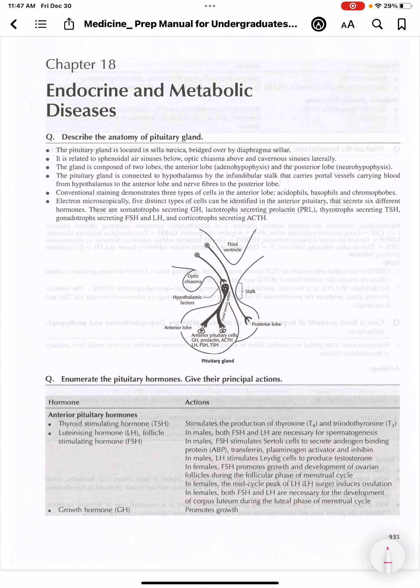Let's study about the hormones secreted by pituitary gland. First, we will study about the hormones secreted by anterior pituitary. The first hormone is thyroid stimulating hormone, which will stimulate the production of thyroxine T4 and triiodothyronine T3.